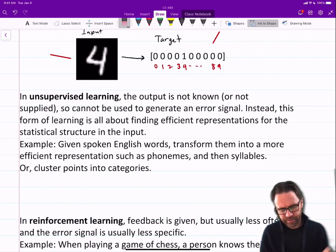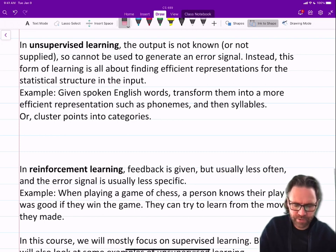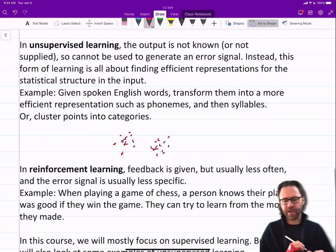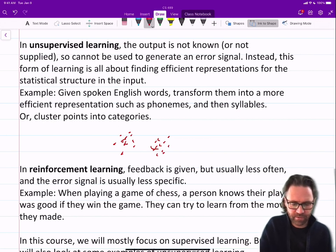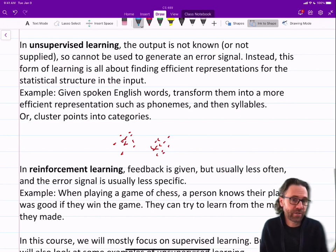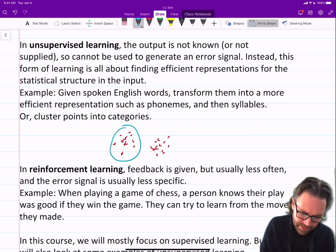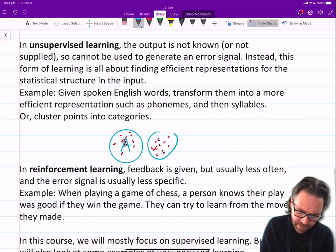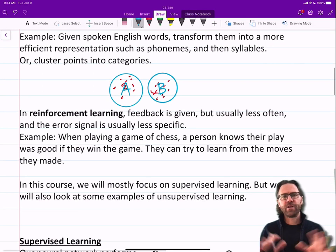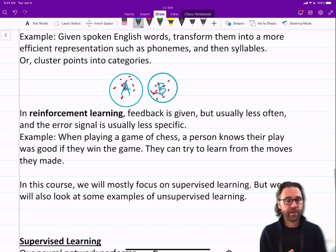Or as another example, how about just clustering points into categories? So let's say we had a data set that looks like this, a bunch of points like that. Now if I said, classify those or find different categories, or find efficient ways of representing or describing that data, you might say, well, let's call this category A, let's call this category B. So that's unsupervised learning.